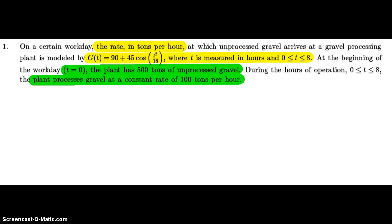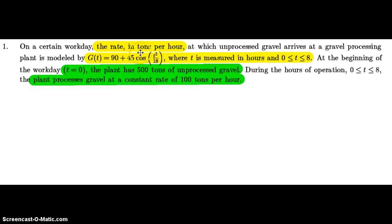Welcome to problem number one in the free response section of the 2013 AP Calculus AB exam. Notice I've highlighted some of the important things here. The first thing is function g of t is the rate in tons per hour at which unprocessed gravel arrives at a processing plant.